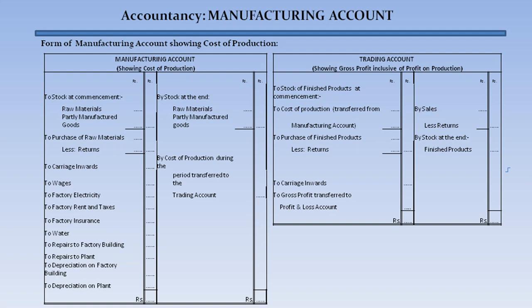The form of manufacturing account showing cost of production has two sets. The manufacturing account shows on the debit side: stock at commencement of raw materials and partly manufactured goods, purchases of raw materials less returns, carriage inwards, wages, electricity, factory rent and taxes, factory insurance, water, repairs to factory building, repairs to plant, depreciation on factory building, and depreciation on plant. On the credit side: stock at end of raw materials and partly manufactured goods, and the cost of production during the period transferred to the trading account.